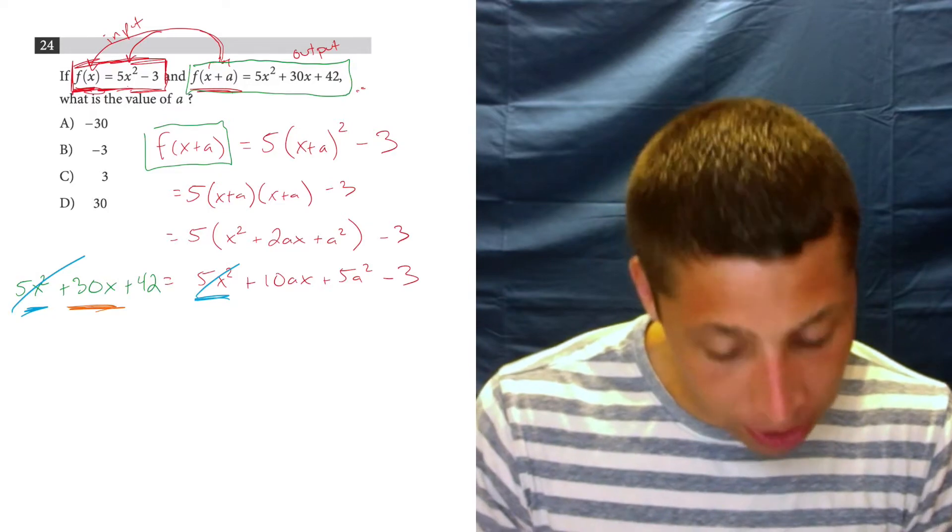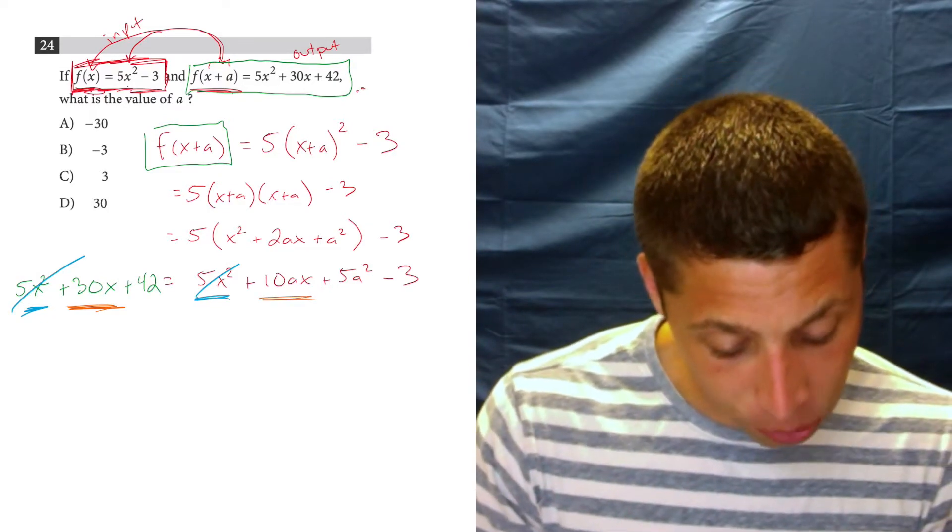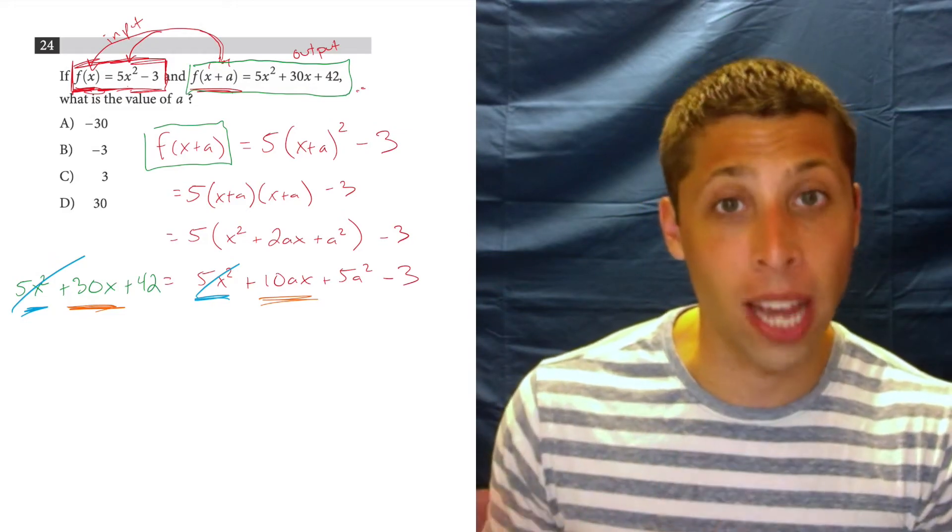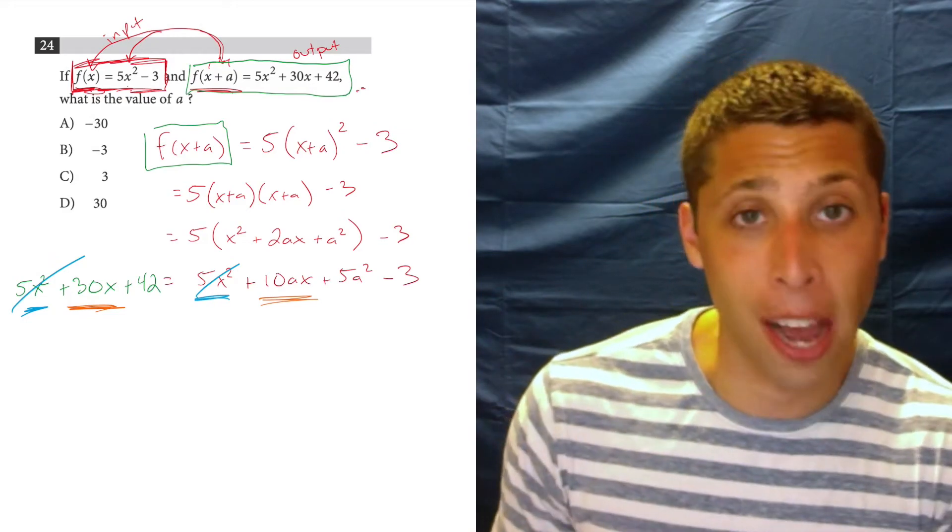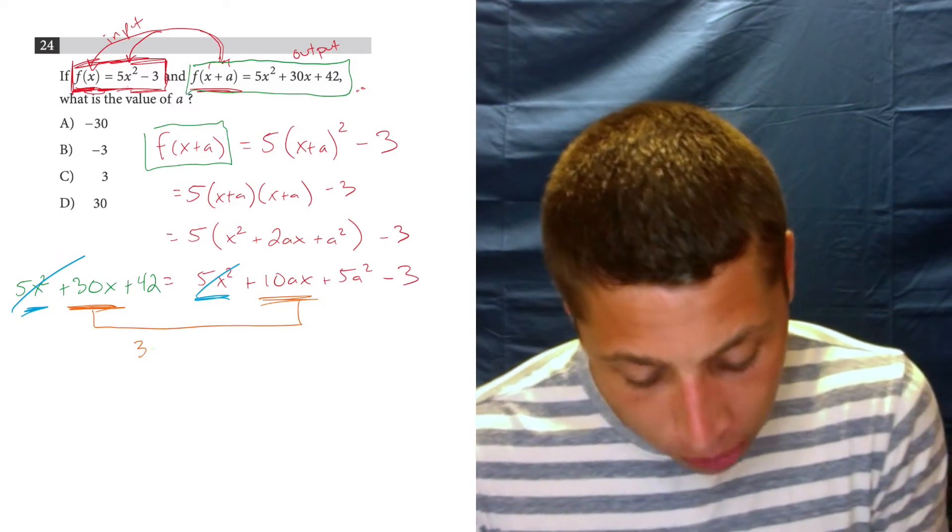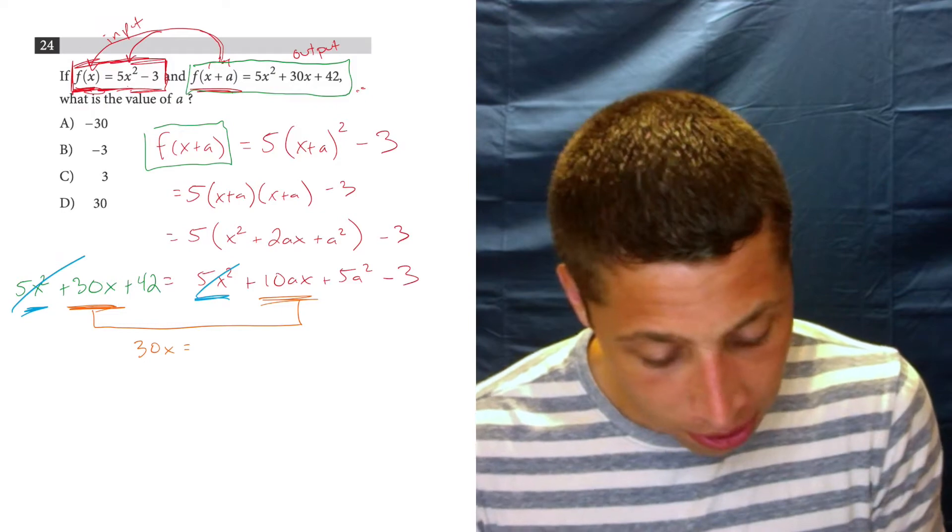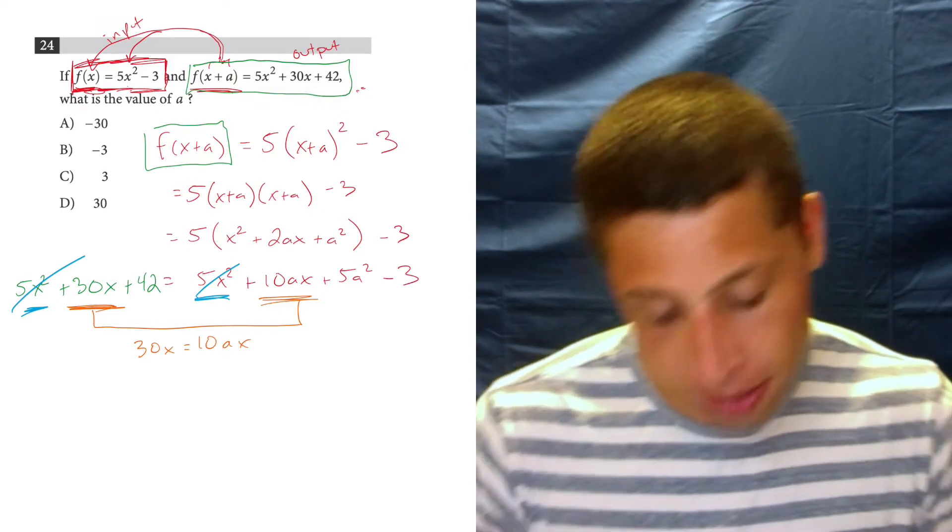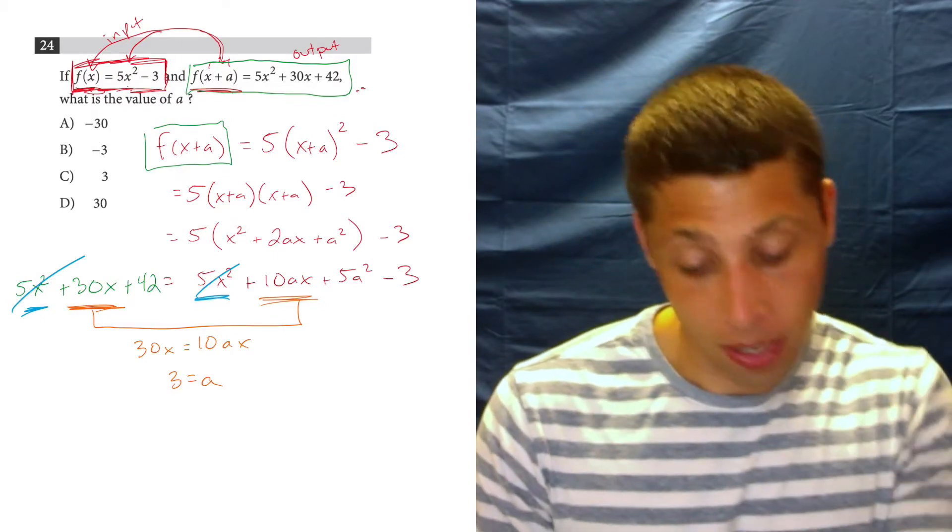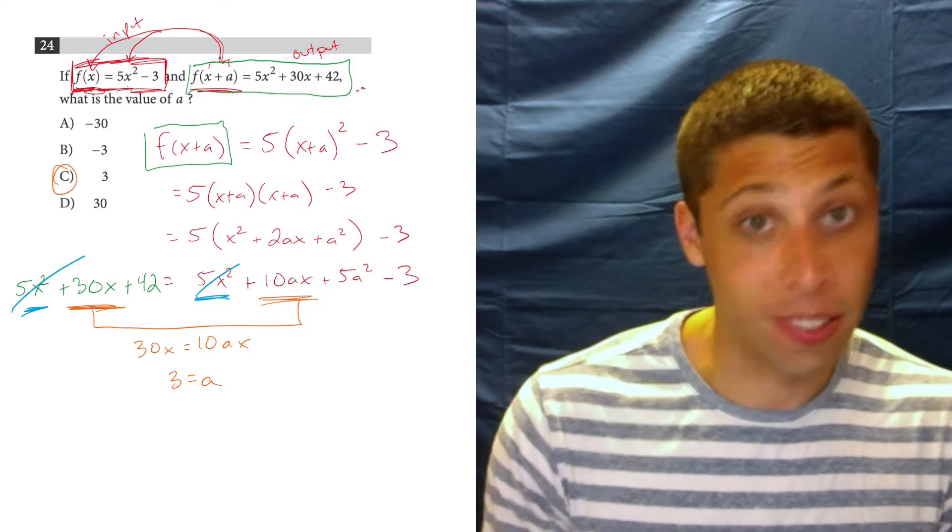However, this one has a 30x and this one has a 10ax. Those two pieces, the only ones with x's, are supposed to balance out. And so what we can do is we can say, well, that's kind of like a mini equation. 30x is supposed to equal 10ax. What would make that true? If a were 3, which is an answer. It's the answer.